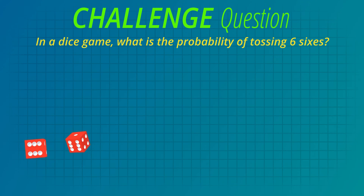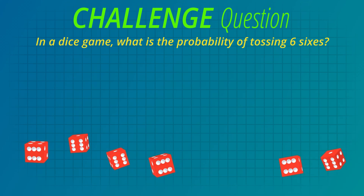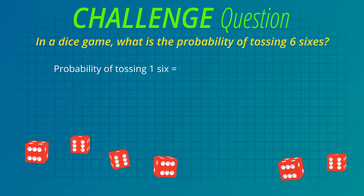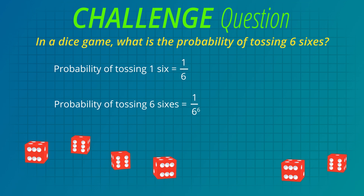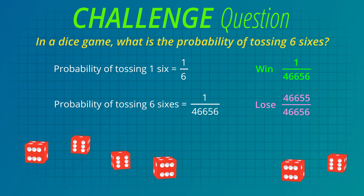Are you ready for a challenge? In a dice game, what is the probability of tossing six 6s? The chance of tossing one 6 on a die is 1 out of 6, or one sixth. If the die is tossed 6 times, that's one sixth multiplied by one sixth, six times over. That's 1 over 6 to the power of 6, which is 1 over 46,656. Wow — we will probably win 1 game out of every 46,656 games, but that means we'll probably lose in the other 46,655 games!